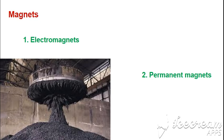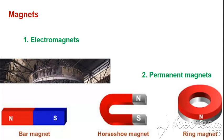Permanent magnets show their magnetism permanently. Therefore, it is a characteristic of the material which it's made. Based on the shape, permanent magnets can be bar magnets, horseshoe magnets, and ring magnets.